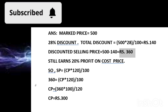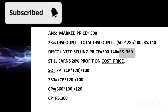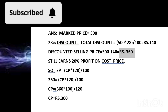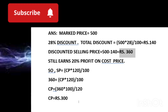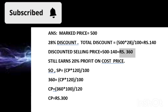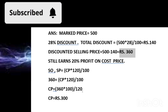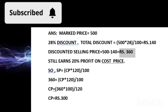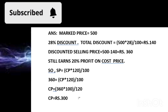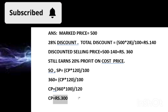Now we solve for CP: CP = 360 × 100/120 = 300. So the cost price is rupees 300. That is the answer.